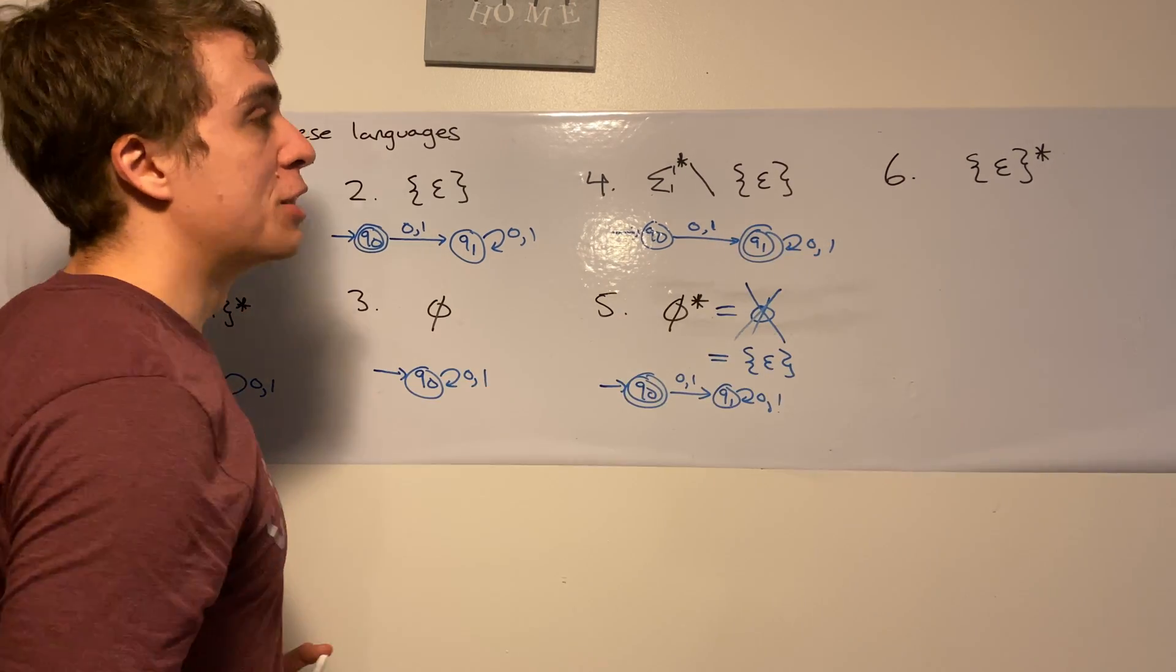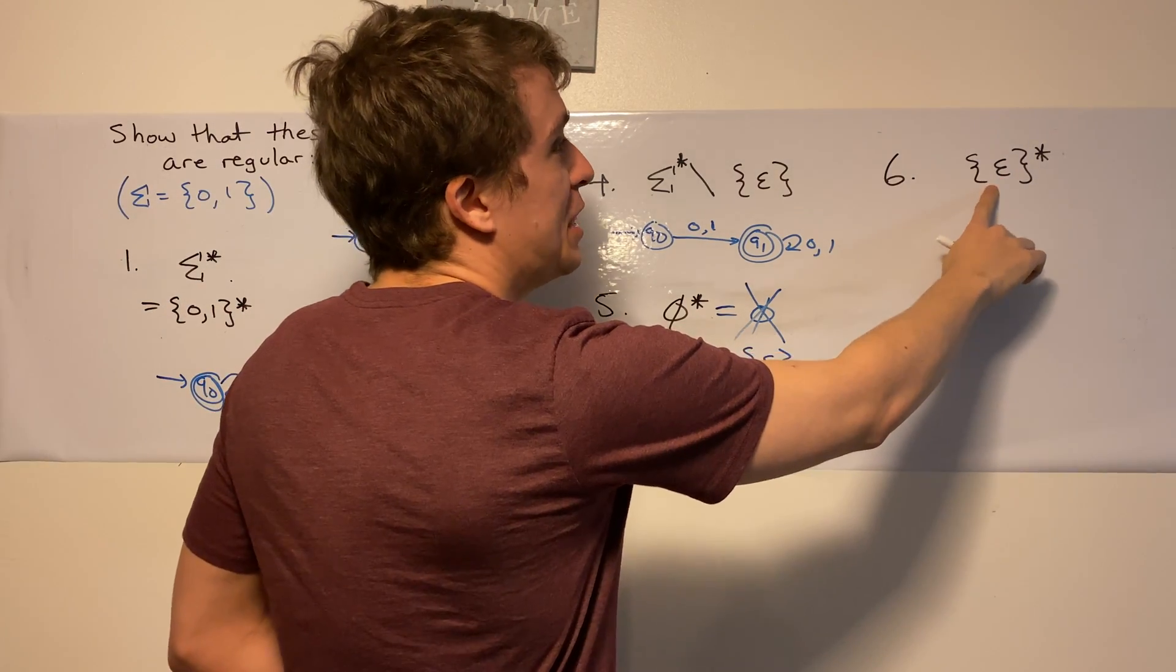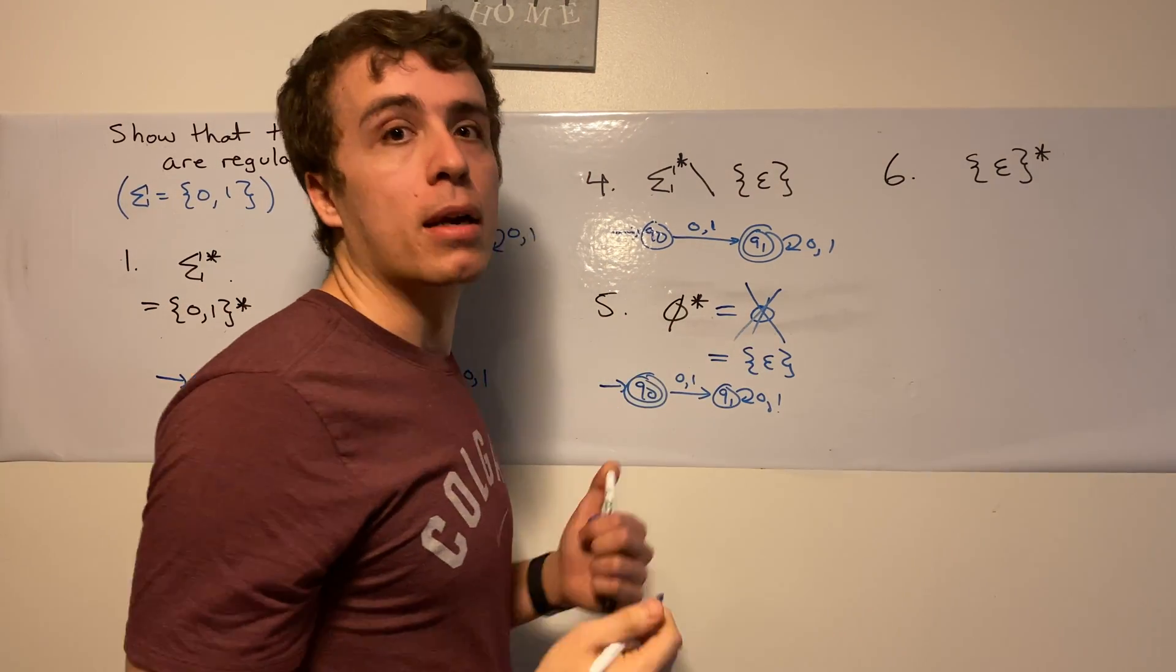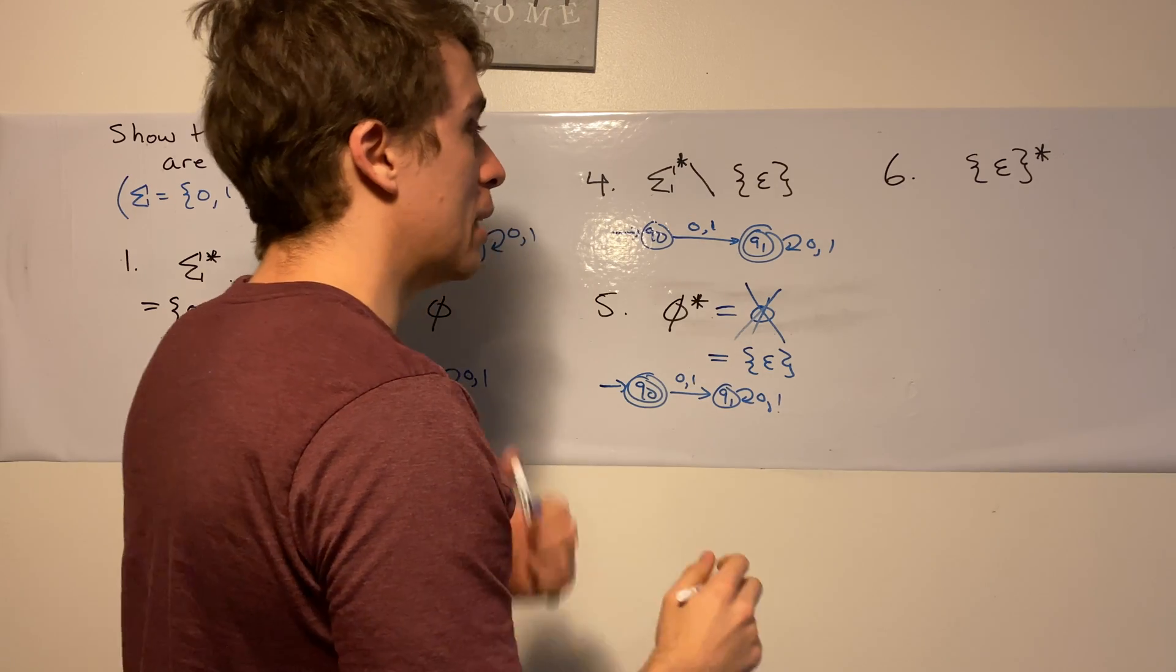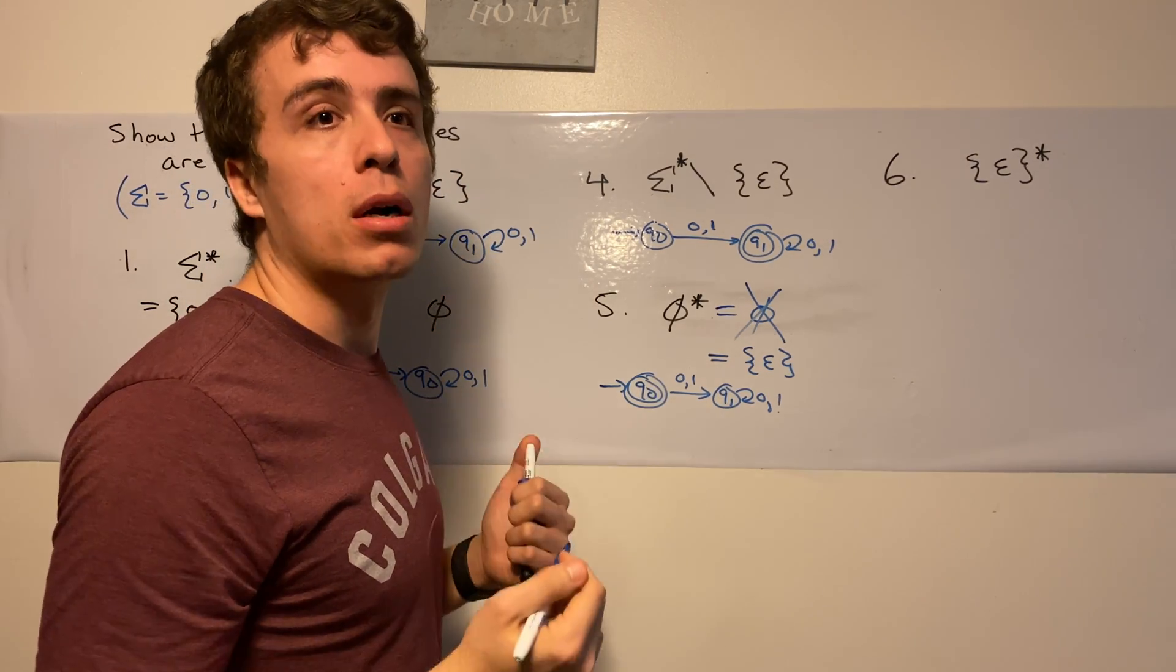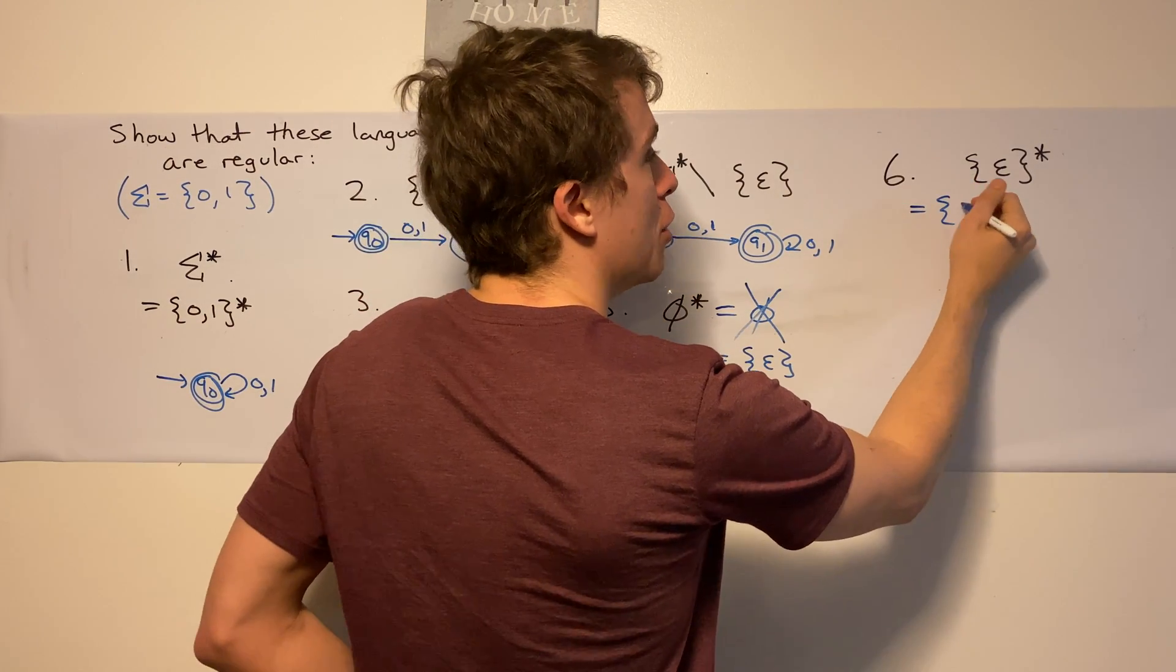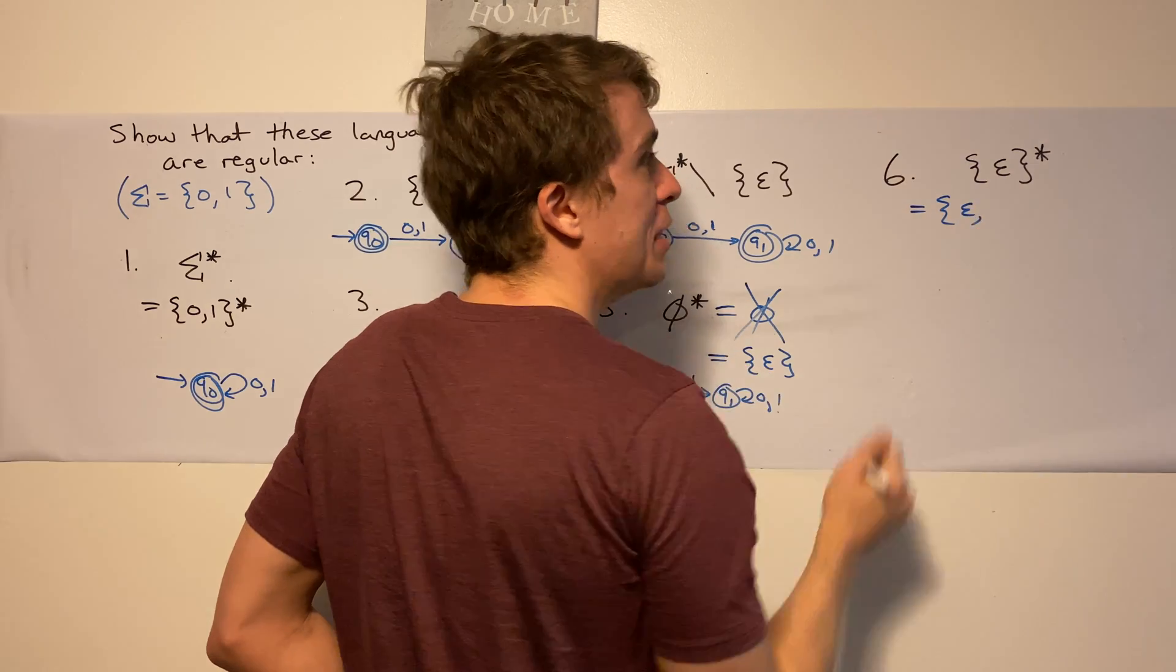So now let's move on to the final question. It says, and is the set containing the empty string star? Well, let's see. Well, the empty string is in the star of any language. So let's write out what this set is. So it's the empty string that's always in there, because we're starring it.